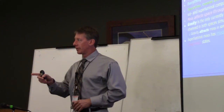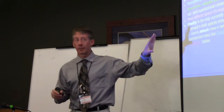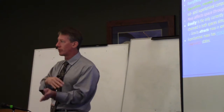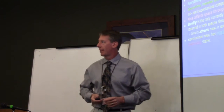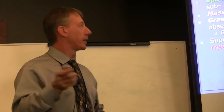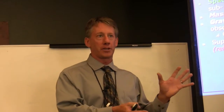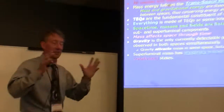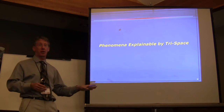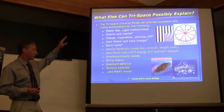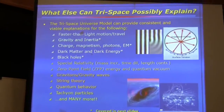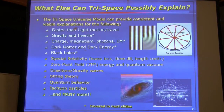Dave Froning and I wrote a paper on how to transform from one space to the next — switching phase and group velocity — what that means to mass, momentum, and time. This explains so many anomalies in physics. Phenomena explainable by trispace include: faster-than-light travel, gravity and inertia, charge, magnetism, dark matter, dark energy, and black holes.